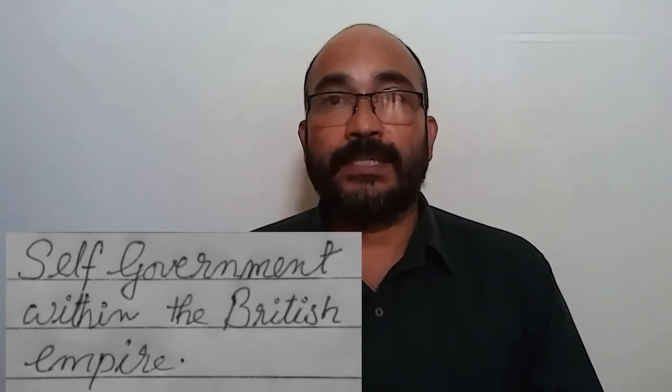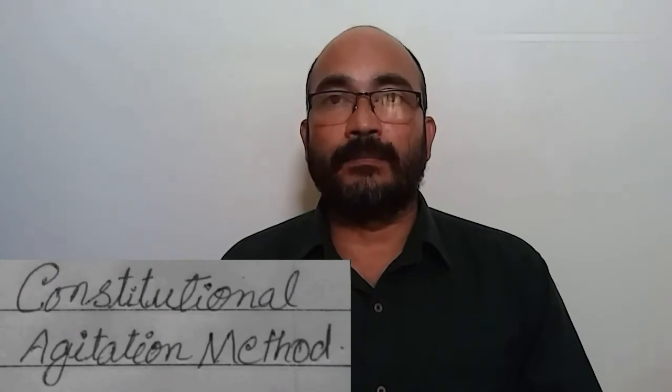The main goal of the moderates was the attainment of self-government within the British Empire. They did not demand complete freedom — they demanded self-government under British rule. In order to attain their goal, they adopted the constitutional agitation method, which was a peaceful method.